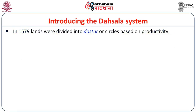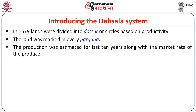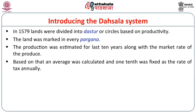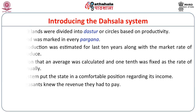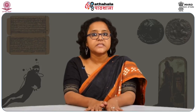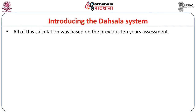In 1579, land was divided into Dastur or circles based on productivity. The land was marked in every Pargana. The production was estimated for the last 10 years along with the market rate of the produce. Based on that, an average was calculated and one-third was fixed as the rate of tax annually. This system put the state in a comfortable position regarding its income. The peasants knew the revenue they had to pay. However, the worst part of this system was that the risk of crop failure was put on the shoulder of the peasant and the state took no responsibility. All of this calculation was based on the previous 10 years' assessment and was very complex.